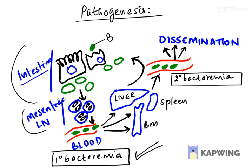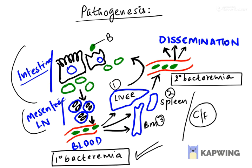In the primary bacteremia phase, where it is going to cause problems: one is in the liver, second is in the spleen, and third is in the bone marrow. And this is from where the clinical features of this particular condition are going to start.